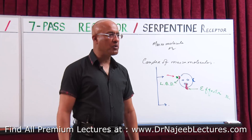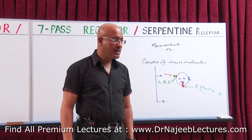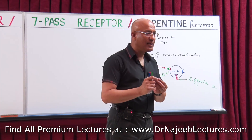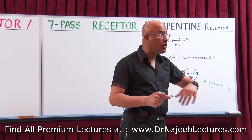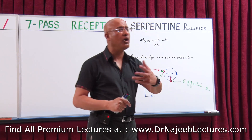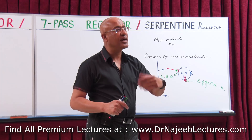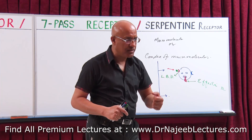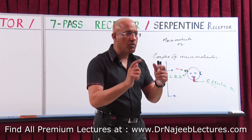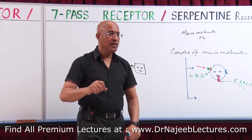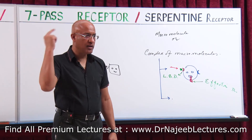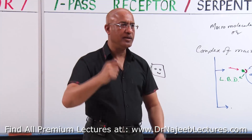So plasma proteins are just carriers of hormones or drugs. They have a binding domain but do not have an effector domain. Everything in our body that can bind something but does not undergo conformational change and does not produce any effector biological response cannot be called a receptor. To be a receptor, it must have minimum two domains: a ligand binding domain and an effector domain.